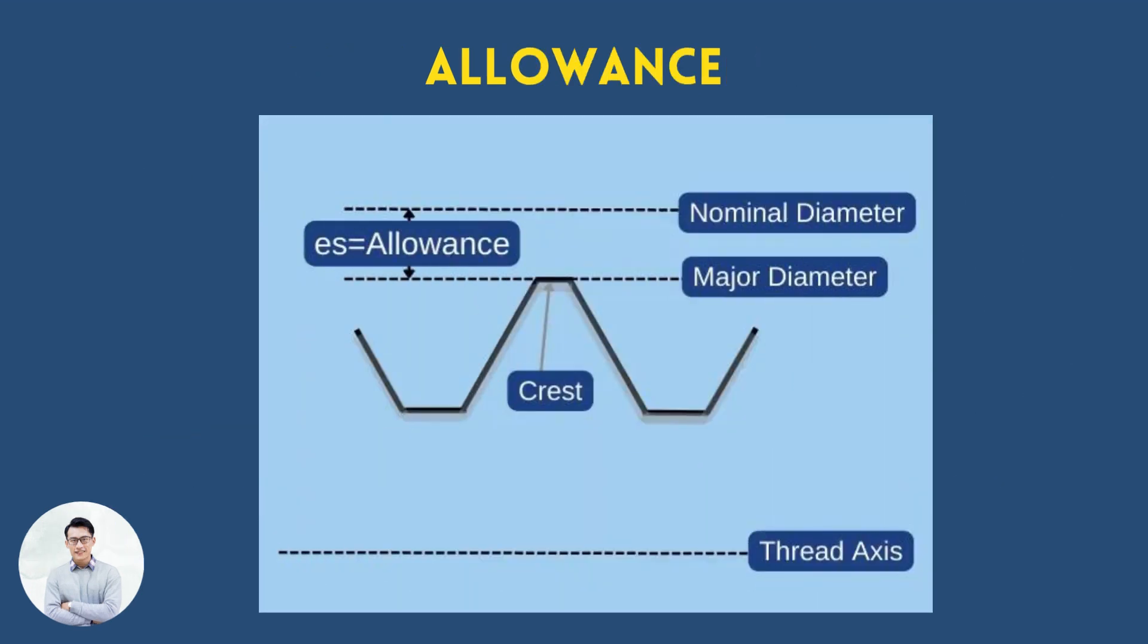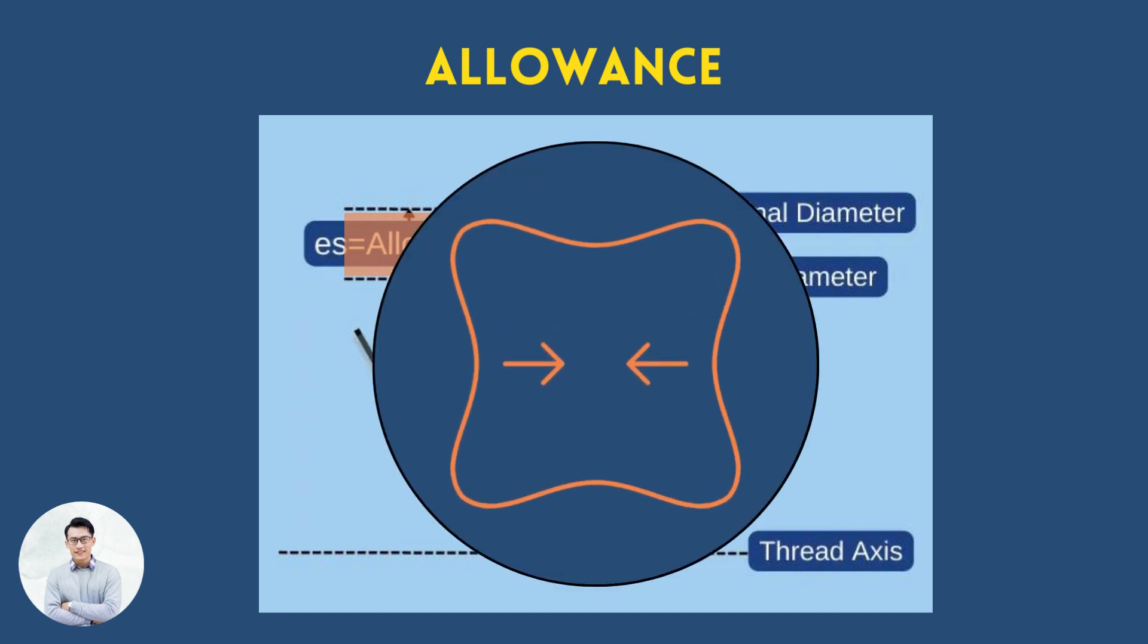Thread allowance is the distance, in maximum material condition, between the nominal diameter and the crest of an external thread. It serves as an indication of how tight or loose the thread is.